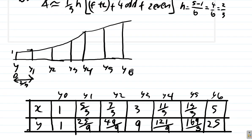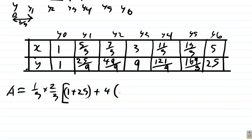So here now, 4 times the odd ordinates. The odd ordinates would be y1, y3, y5. So y1 is 25 over 9 plus y3 is 9 plus y5 is 169 over 9. Let me rewrite this thing. 169 over 9. That is what I have there.